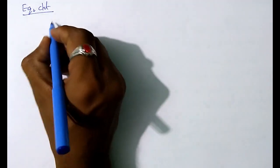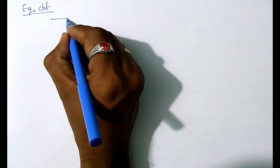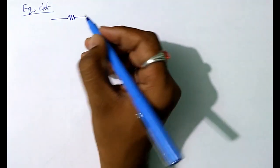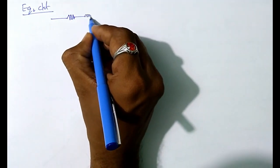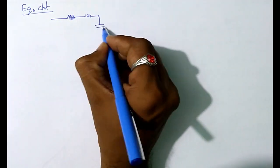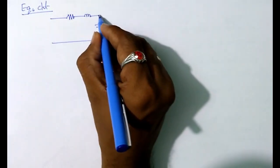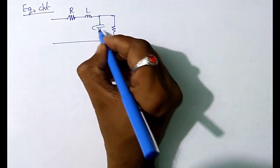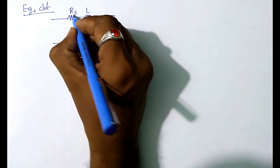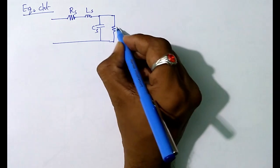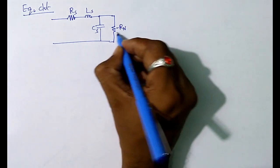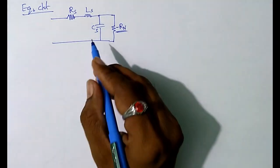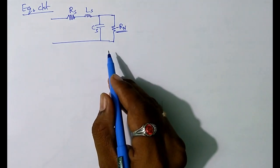The equivalent circuit of the tunnel diode is also very important and can appear in exams. The equivalent circuit consists of RS (series resistance), LS (series inductance), and CS (series capacitance) all in series, along with a negative resistance element RN.